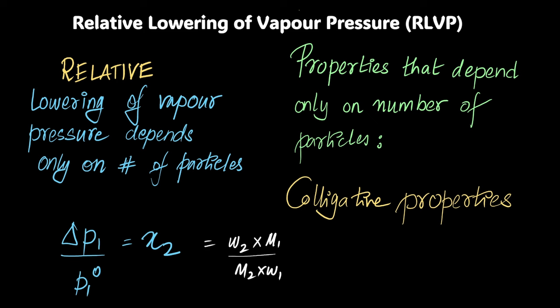All right, that was it. Relative lowering of vapor pressure is a really, really cool property that only depends on the number of particles which introduces us to colligative properties. Here's a quick formula and this only and only works if N2 is much smaller than N1. Please do this derivation a couple of times and get used to it. We'll do some cool numericals around this as well and you should practice this a lot as well.